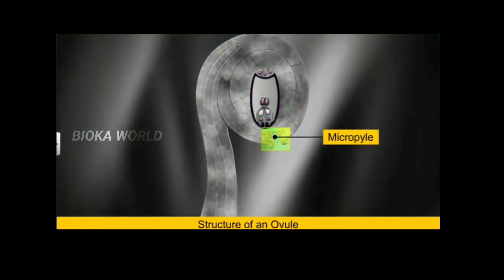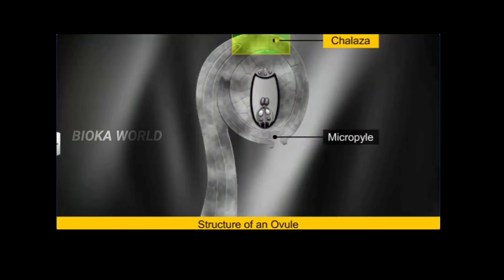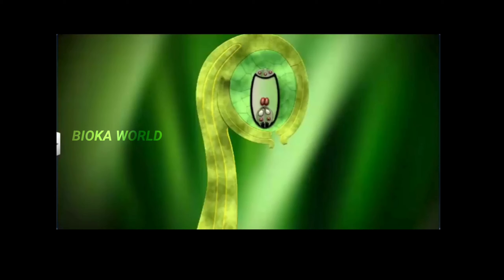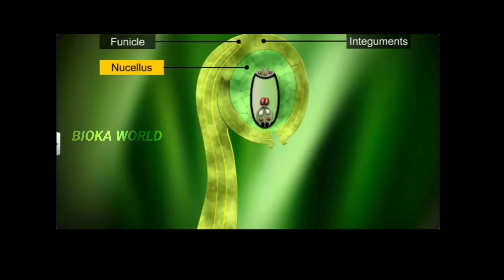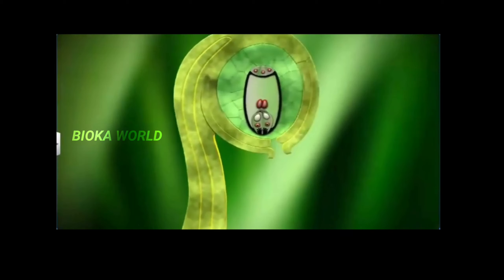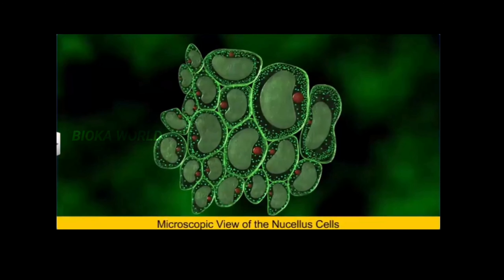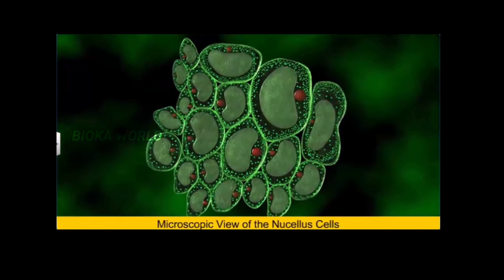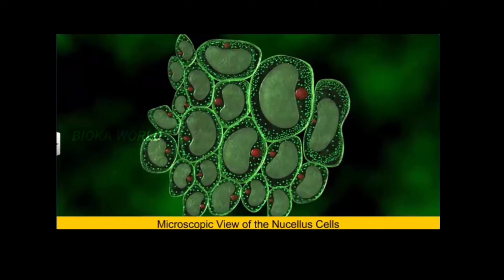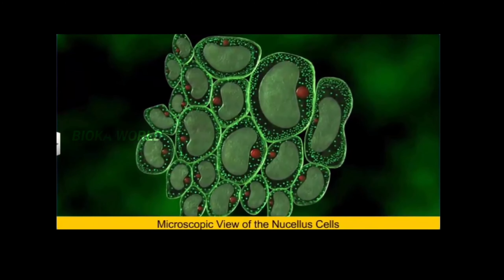While the micropyle forms one end of the ovule, the chalaza forms the basal part of the ovule. At the chalaza region, we find that the funicle and the integuments join the nucellus, the central region of the ovule that is made up of massive, diploid, colorless, thin-walled parenchymatous cells containing food reserve materials.